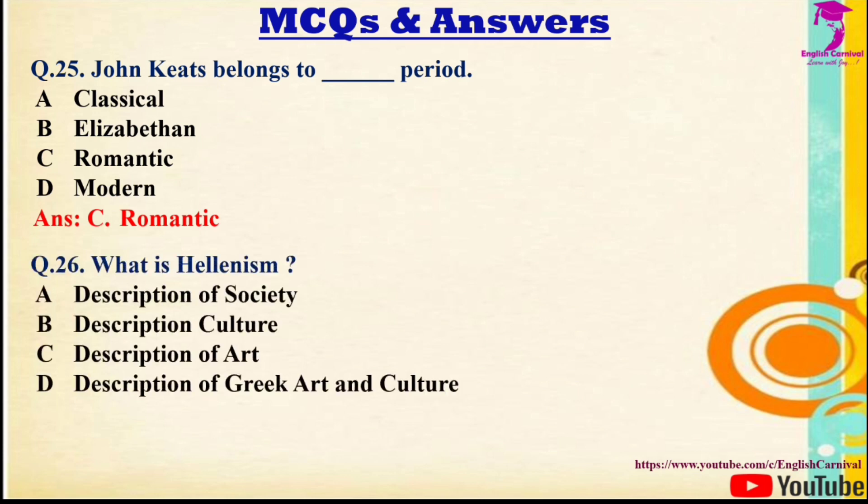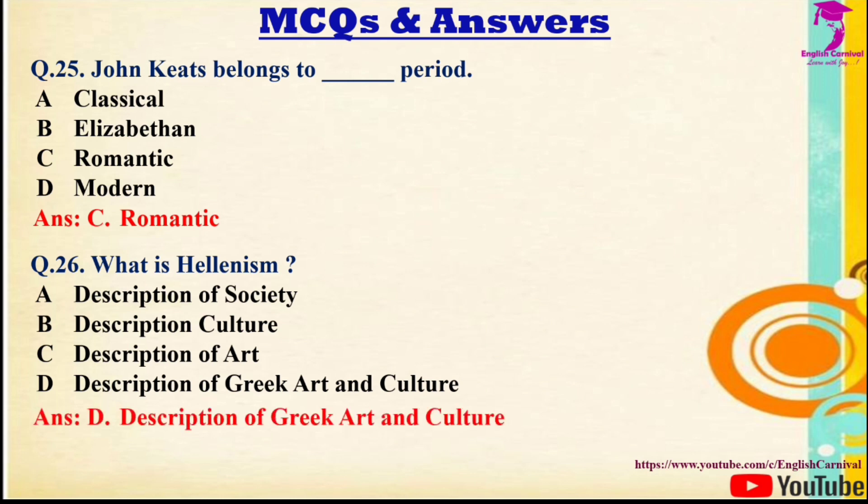Question 26: What is Hellenism? Options: A) Description of society, B) Description of culture, C) Description of art, D) Description of Greek art and culture. The correct answer is D — Hellenism means the description of Greek art and culture.